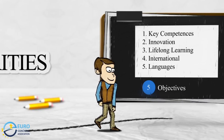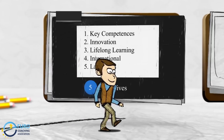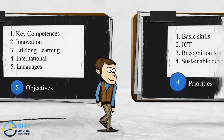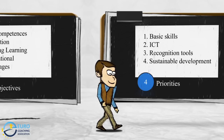The objectives are to improve the level of key competencies, to foster innovation in education, to promote European lifelong learning, to enhance the international dimension of education and training, and to improve the teaching and learning of languages. The priorities are to develop basic and transversal skills, to enhance information and communication technologies' uptake in teaching and learning, to promote stronger coherence between different EU and national transparency and recognition tools, and to promote sustainable development in European education.